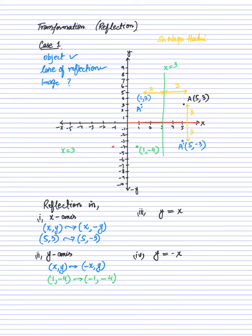The third case is reflection across the line y equals x. This line passes through the origin diagonally. When reflecting across y equals x, the coordinates swap: x comma y maps onto y comma x. Taking point A at 5 comma 3, after reflection across y equals x, the image is 3 comma 5.